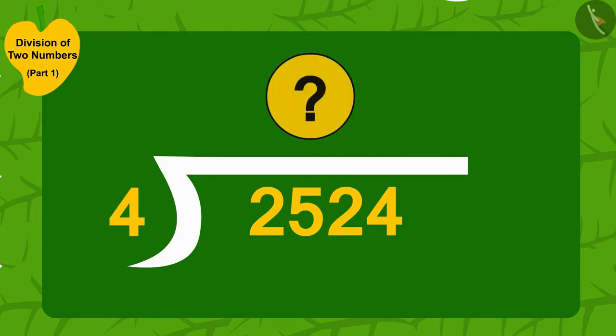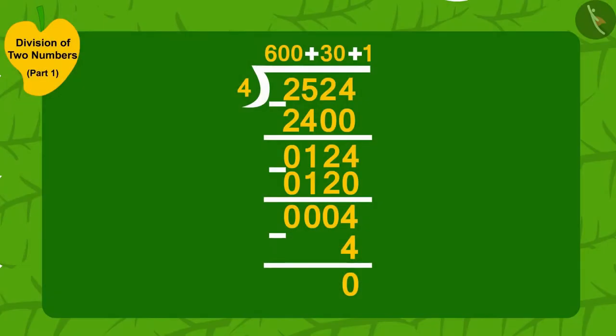If you want, you can stop the video and find the answer. We can find out by doing division in this way, so that Uncle can divide 2,524 mangoes into groups of four mangoes and divide it equally among 631 people.